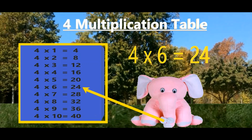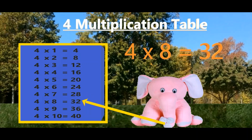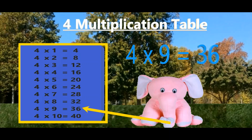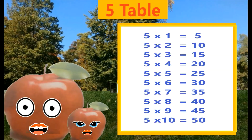Four sevens are twenty-eight. Four eights are thirty-two. Four nines are thirty-six. Four tens are forty. Five table.